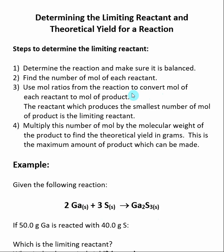We use these mole ratios to convert moles of reactant to moles of product. We do this type of calculation for each individual reactant, so there will be multiple calculations. We then compare and say which reactant produces the smallest number of moles of product — the one that does that is going to be the limiting reactant, and the number of moles made will determine our theoretical yield.